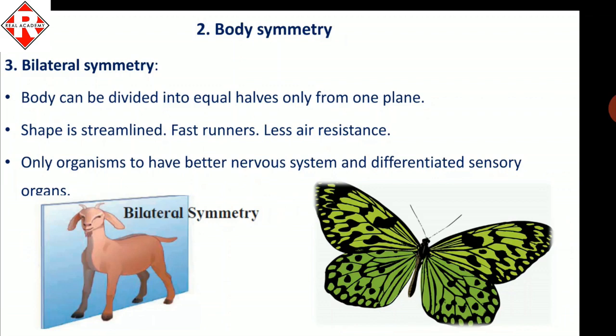Next is bilateral symmetry. 'Bi' means two — the body can be divided into two equal halves but only from one plane. You can see examples like a goat and a butterfly. In this case, the shape is streamlined and these animals are fast movers with less air resistance. Only organisms with bilateral symmetry have a better-developed nervous system and differentiated sensory organs.